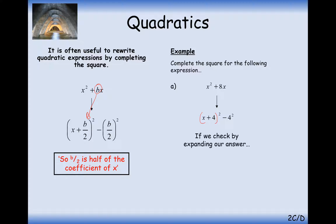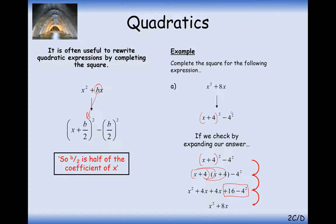Now why do we need to take away the 4 squared at the end? Let's expand our brackets and check. We've got x plus 4 squared minus 4 squared. Expanding x plus 4 squared gives x plus 4 times x plus 4 — remember, squaring a bracket means multiplying it by itself. So we get x squared plus 4x plus 4x plus 16, then take away 4 squared. This is why we take away that 4 squared — when you expand the squared bracket, you've created an extra 4 squared that you didn't need, so you take it away to balance the expression.